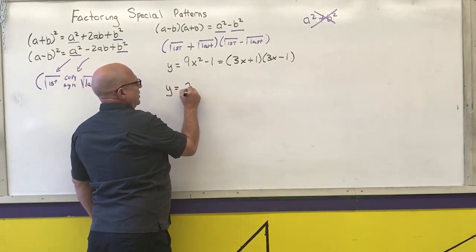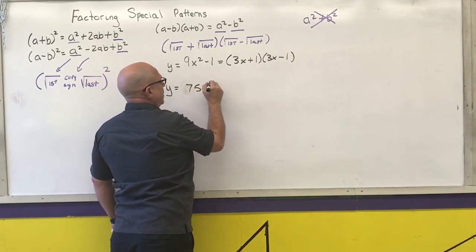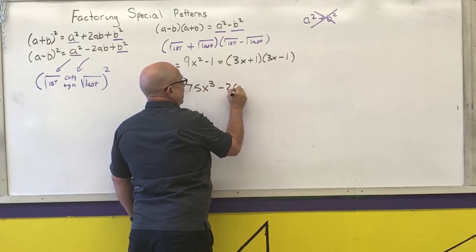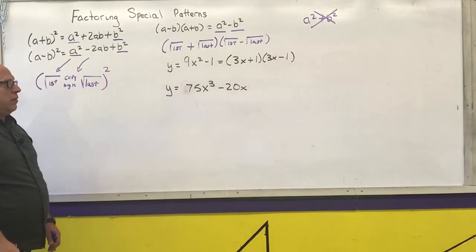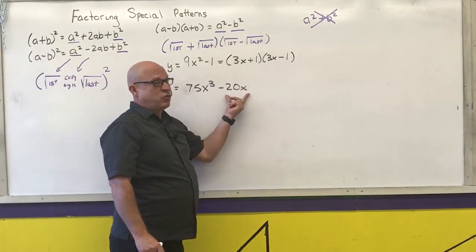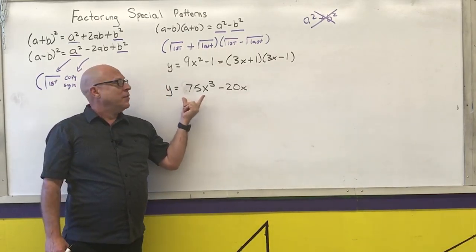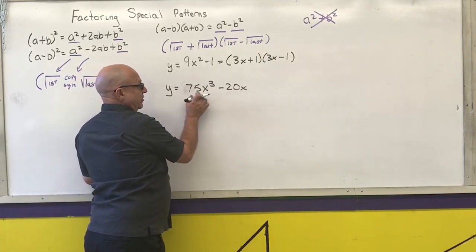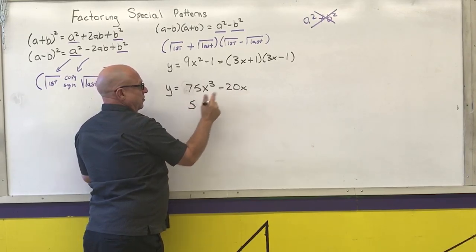Another example: y equals 75x cubed minus 20x. You may say there's no perfect square here — that's a cube. But I do have a common factor in both of these. 5 goes into both 20 and 75, and the lowest power of x that appears in both terms is x to the first.